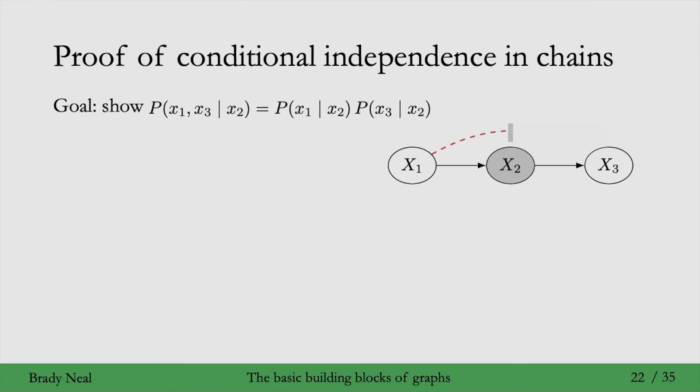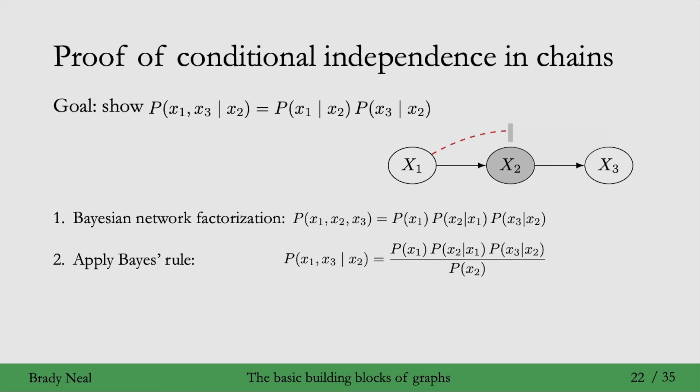So to do this proof, we start with the Bayesian network factorization. In order to write that down, we look at the graph, we see p of x1, and then p of x2 given its parent x1, and then p of x3 given its parent x2. That's what we've written down here in the Bayesian network factorization. Then we need to condition this whole thing on x2. So we can use Bayes' rule here, which just tells us to divide this by p of x2.